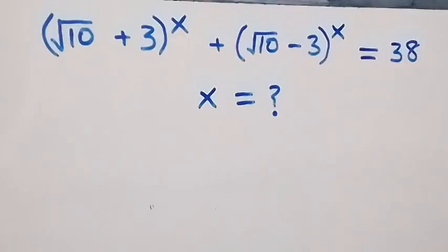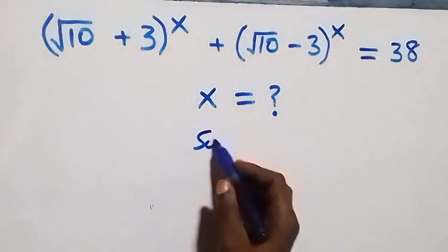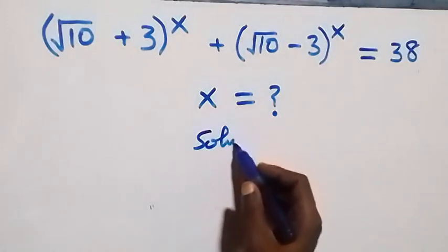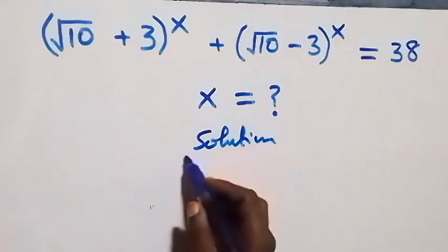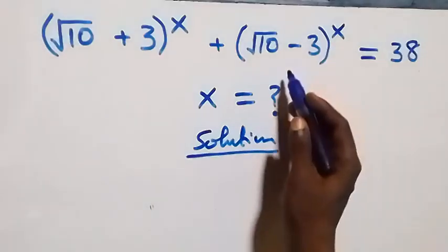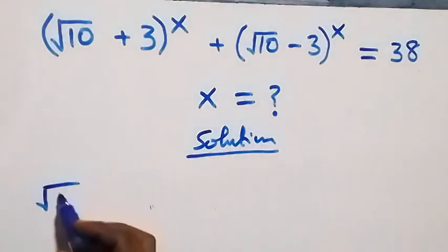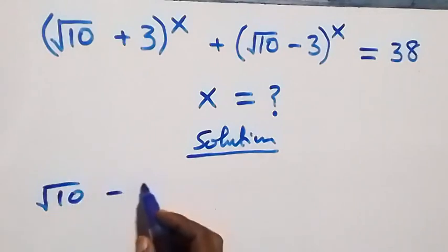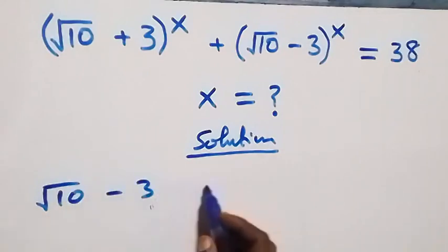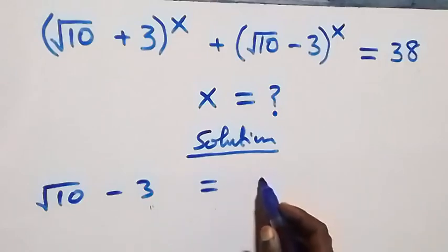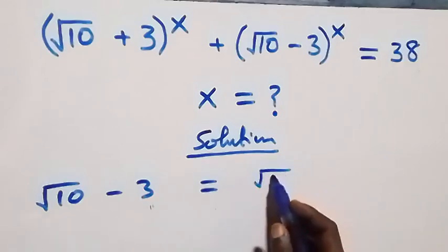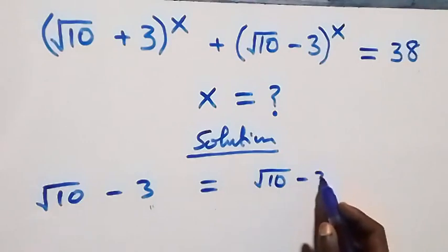Hello, you're welcome. Here is a nice algebra problem. What we have is root 10 minus 3, which can also be written as √10 minus 3.